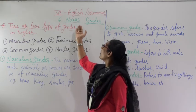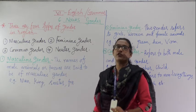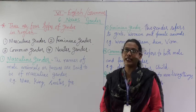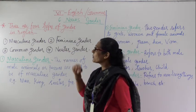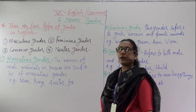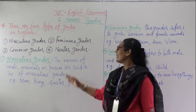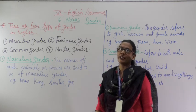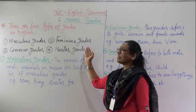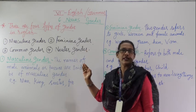So what is Nouns Gender? There are four types of gender in English. The first one is Masculine Gender, the second one is Feminine Gender, the third one is Common Gender, and the fourth one is Neuter Gender. We will see all these four genders in detail with examples.